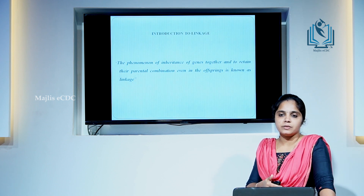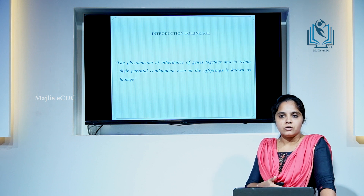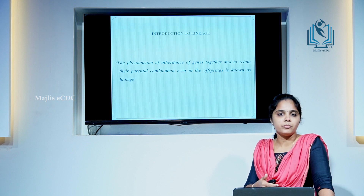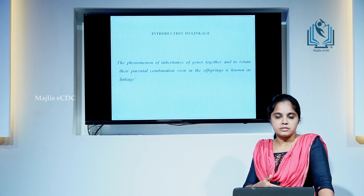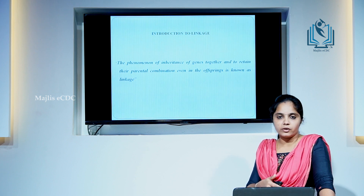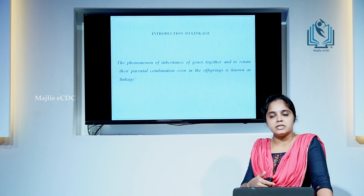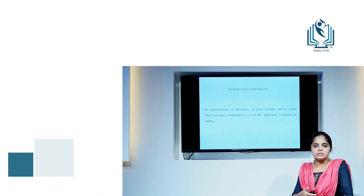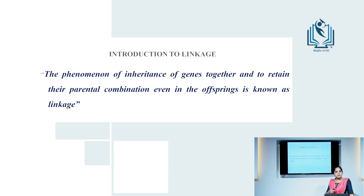Let us start with the introduction to linkage. According to the chromosome theory of inheritance, chromosomes are made up of many genes. Each organism possesses different characters controlled by many genes, so the number of genes exceeds the number of chromosome pairs. In some cases, at the time of meiosis, some genes are not separated — they are inherited together to their offspring. This is called linkage. The phenomena of inheritance of genes together, retaining their parental combination even in the offspring, is known as linkage.